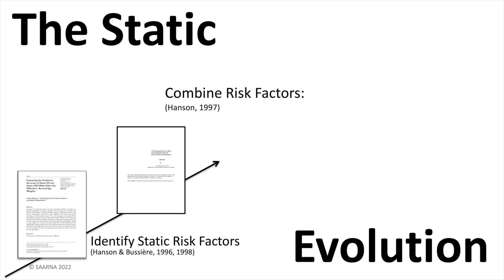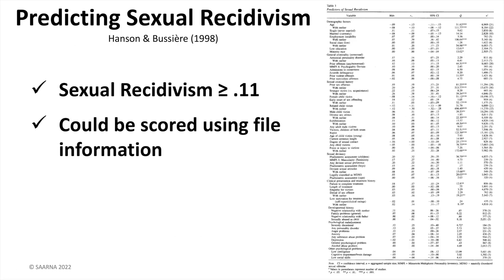A year later, in 1997, Carl Hansen published a government report describing the construction of his first risk assessment tool for sexual offending. Using the pool of potential variables from the meta-analysis, Hansen set two rules for selection: the variables had to have an average correlation of at least 0.1 with sexual offense recidivism, and one should be able to score them using commonly available information such as offense history, police reports, or demographics.